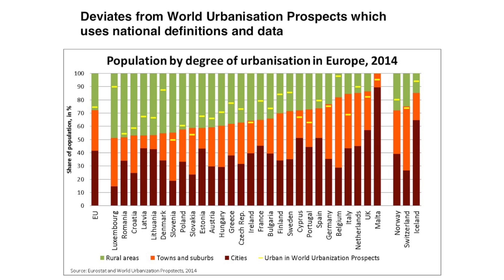What can we learn from this data? We can compare it with data in the World Urbanization Prospects. Overall, the EU is about similar in terms of share of urban population — 74% compared to 72%. Not so different, you say. However, if you look at some specific countries, you'll find very big differences. Denmark, for example, reports 88% urban, whereas we only find 52%. Belgium reports 98% urban, where we find only 82%. So here you see the impact of national definitions versus a harmonized definition.